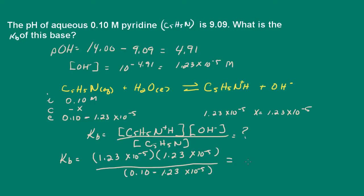And we just go ahead and calculate that. And we get 1.51 times 10 to the negative 5. And that is equal to our base dissociation constant.